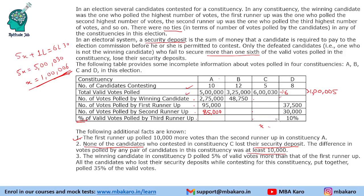So the number of votes received by each of the five candidates in C can be determined. This person receives 1,06,000; the next receives 1,16,000; then 1,26,000; 1,36,000; and the winner receives 1,46,000 votes. For constituency C, there is exactly one minimum and maximum possible value, so these are the only values possible.